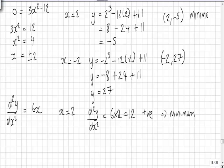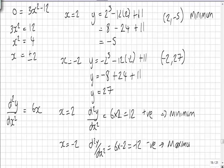At x = -2, d²y/dx² equals 6 times -2, which is -12, a negative value, which implies a maximum. So at (-2, 27), we do in fact have a maximum.